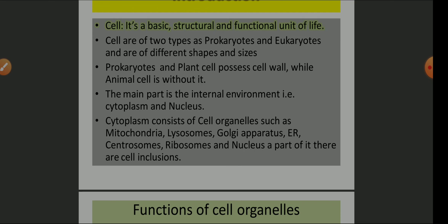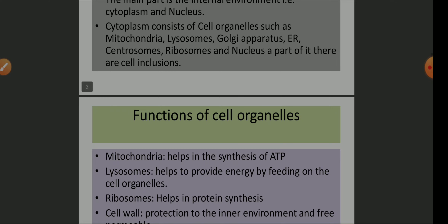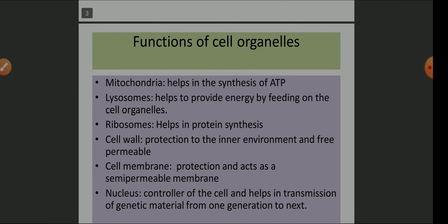Let us see the functions of the cell organelles. We are not going to study about the cell in detail but we are going to stick to our syllabus. Mitochondria: students write it is the powerhouse of the cell, but they don't get marks because that is not the function — it is the name given to mitochondria. The function of mitochondria is that it helps in the synthesis of ATP.